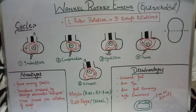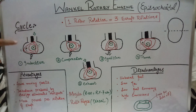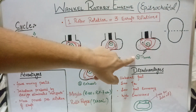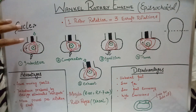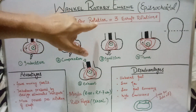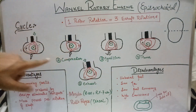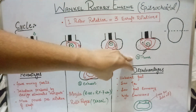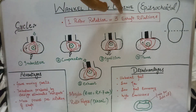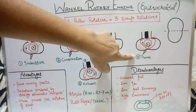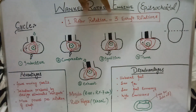The exhaust port then opens and burned gases escape. For every combustion chamber — AB, BC, and CA — there will be one power stroke. So in one rotor rotation there will be three power strokes, meaning in one eccentric shaft rotation there will be one power stroke.